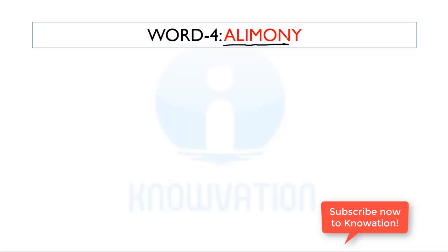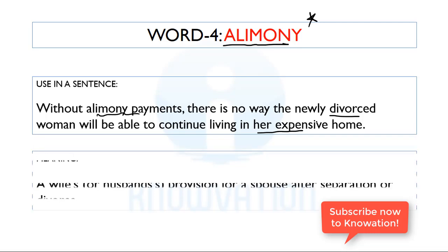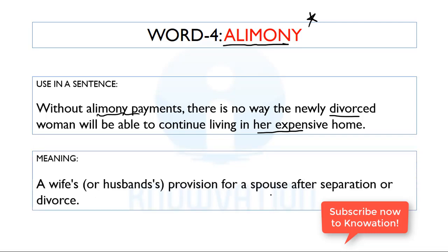The next word is Alimony — another very important word. It is mostly used in legal articles about laws or verdicts given by courts. Its use in a sentence: 'Without alimony payments, there is no way the newly divorced woman will be able to continue living in an expensive home.' You might have understood alimony payment — it is related to some kind of payment given to a divorced person, and it can apply to both male and female.